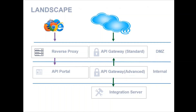This backend service could be an Integration Server or it could be another regular API for that matter. So this is the overall traffic flow of the different components in the webMethods stack, which comprises of the Portal, the Gateway, and Integration Server.